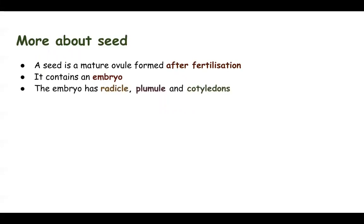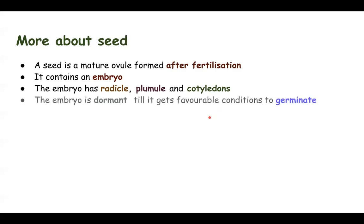The embryo has a radicle and a plumule. The radicle is the future root and the plumule is the future shoot. To provide nourishment, the embryo has cotyledons — the cotyledons may be one or two. If there is one cotyledon, the seed is called a monocot seed; if two, it is called a dicot seed.